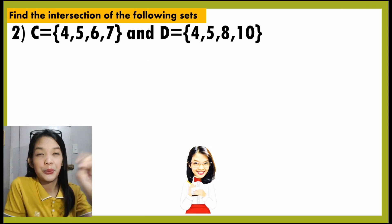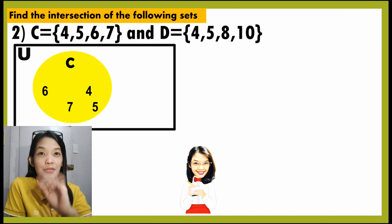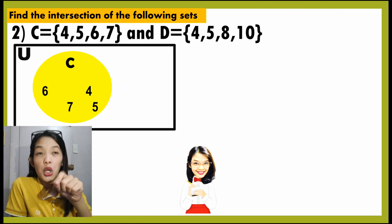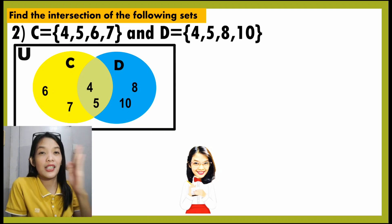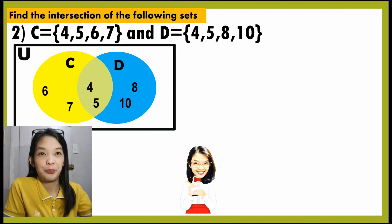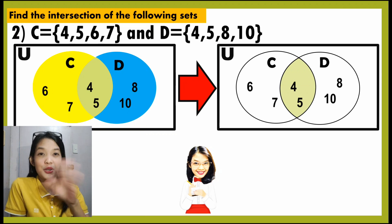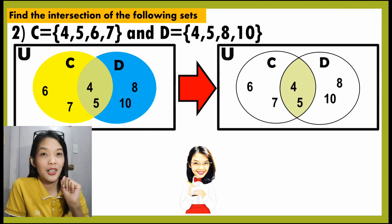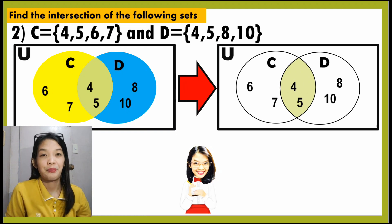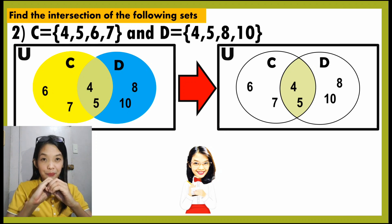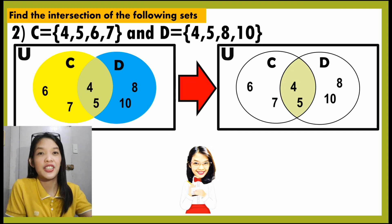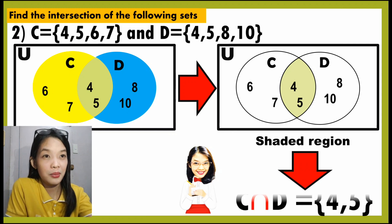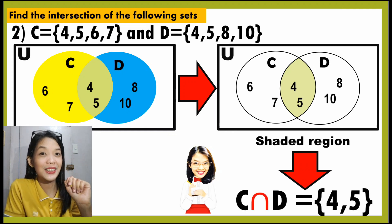Let us illustrate number 2. Set C has the elements 4, 5, 6, and 7. Observe that 4 and 5 can also be found in set D, because the elements of set D are 4, 5, 8, and 10. To get the intersection, find the common elements. The common elements are written under the intersection of the circles — the overlapping portion is the shaded region, and the answer is 4 and 5 as the intersection of C and D.